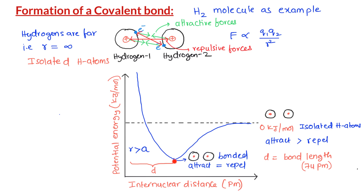The combined energy of the two hydrogen atoms is lower when they are bonded compared to when the atoms are isolated. Therefore, when the two hydrogen atoms bond with each other, energy is released, and the resultant molecule is more stable than the individual hydrogen atoms. The energy released in this process is called bond energy, and is equal to the depth of the curve. The energy released when a hydrogen molecule forms from individual hydrogen atoms is equal to 435 kJ per mole. Conversely, if you take a hydrogen molecule and break the bond between the two hydrogen atoms, it costs 435 kJ per mole of energy.